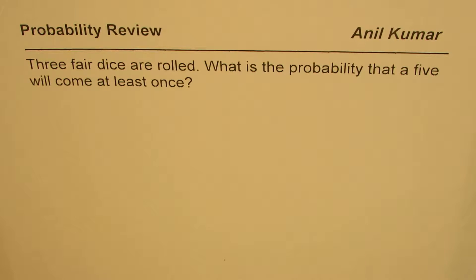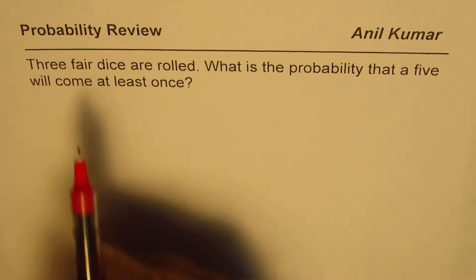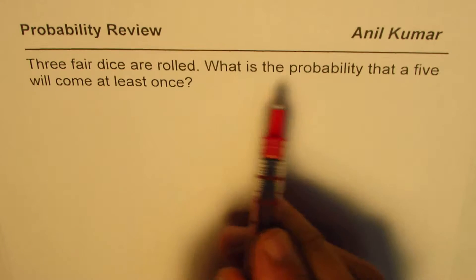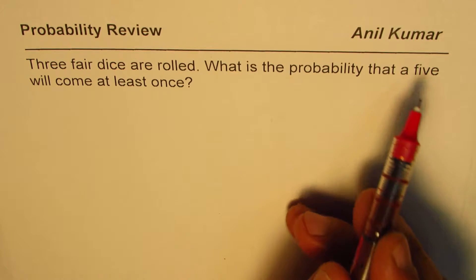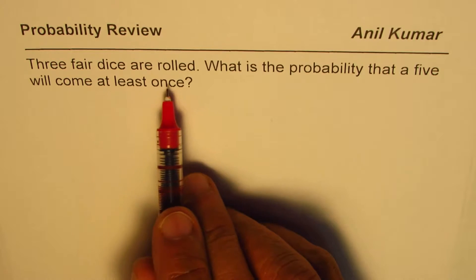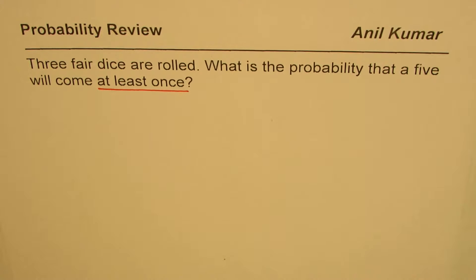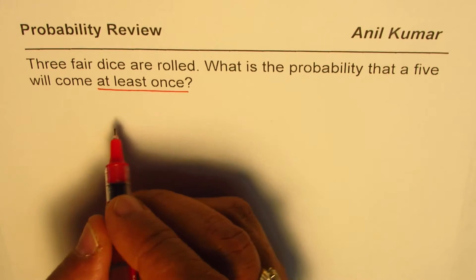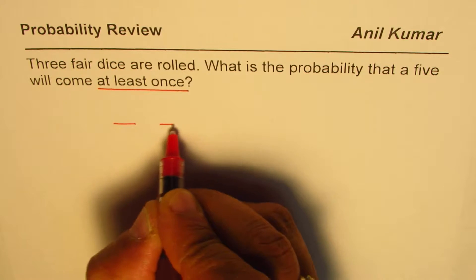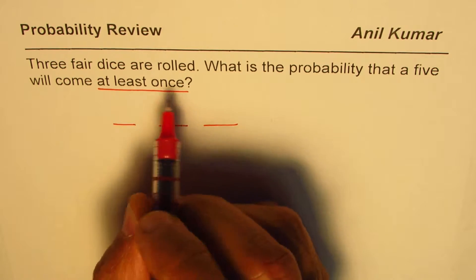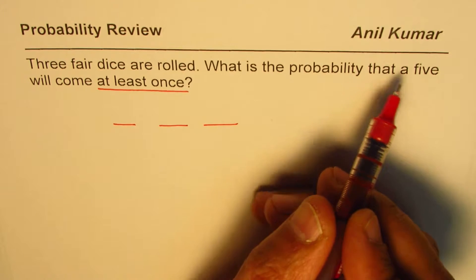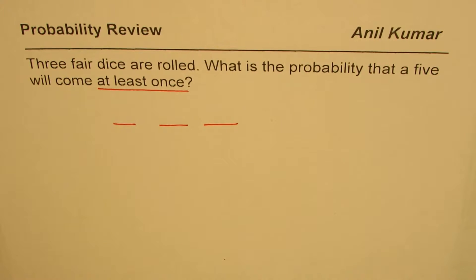I'm Anil Kumar and here is a very interesting question on rolling a die. The question is: three fair dice are rolled — what is the probability that a five will come at least once? It may come one time, two times, or three times. We are rolling three dice and checking the numbers to find the probability that a five will come at least once.